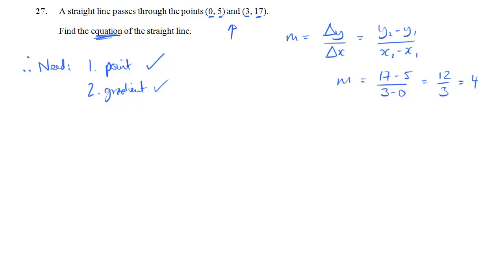So I've got that now. I've got everything I need. I've got a point and a gradient. And in fact, this point here makes my life much easier. This is actually the intercept, isn't it? (0, 5) means it goes through 5 on the y-axis. So 5 is my plus c. So I can go straight to writing down the equation. y equals mx plus c, so 4x plus 5. And that's my solution.